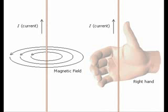So take your right hand and point your thumb in the direction of the current, and as the electrons move in the direction of your thumb, they produce a magnetic field in the direction which your fingers curl.